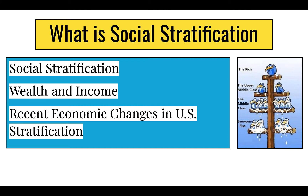In a stratified society, groups at the top have greater access to goods and services than groups at the bottom. Several different systems of stratification are operating right now in the United States, where being wealthy, white, or cisgender male typically confers higher status than being poor, non-white, female, or trans or non-binary. Because social inequality affects a person's life experience so profoundly, it's worthwhile to examine how stratification works as a social phenomenon.